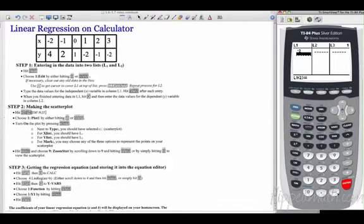So this comes up with a blank screen. This is our list screen. Now it says type the data values for the independent variable in column L1. So up here we have negative two, negative one. So we're going to type these in. So I'm going to press negative two, and then I press enter. And it goes automatically down. Negative one, press enter. Zero, press enter. One, press enter. Two, press enter. Three, press enter. You may want to pause as I go through these steps to make sure you're doing the same thing I'm doing.